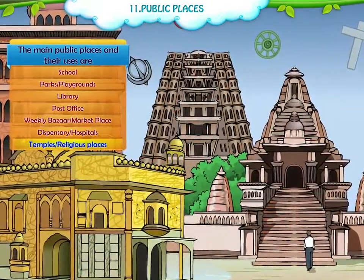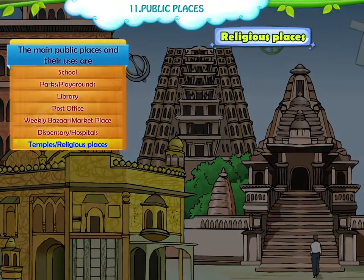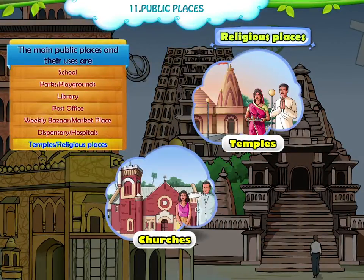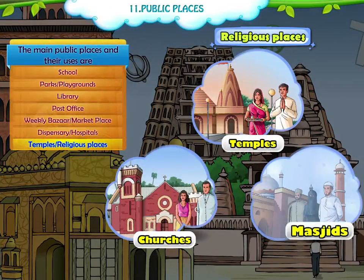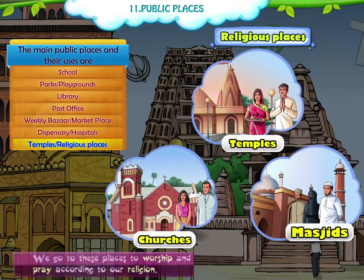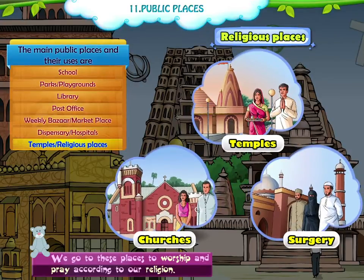Temples or Religious Places. Religious places like temples, churches and masjids are all known as places of worship. We go to these places to worship and pray according to our religion.